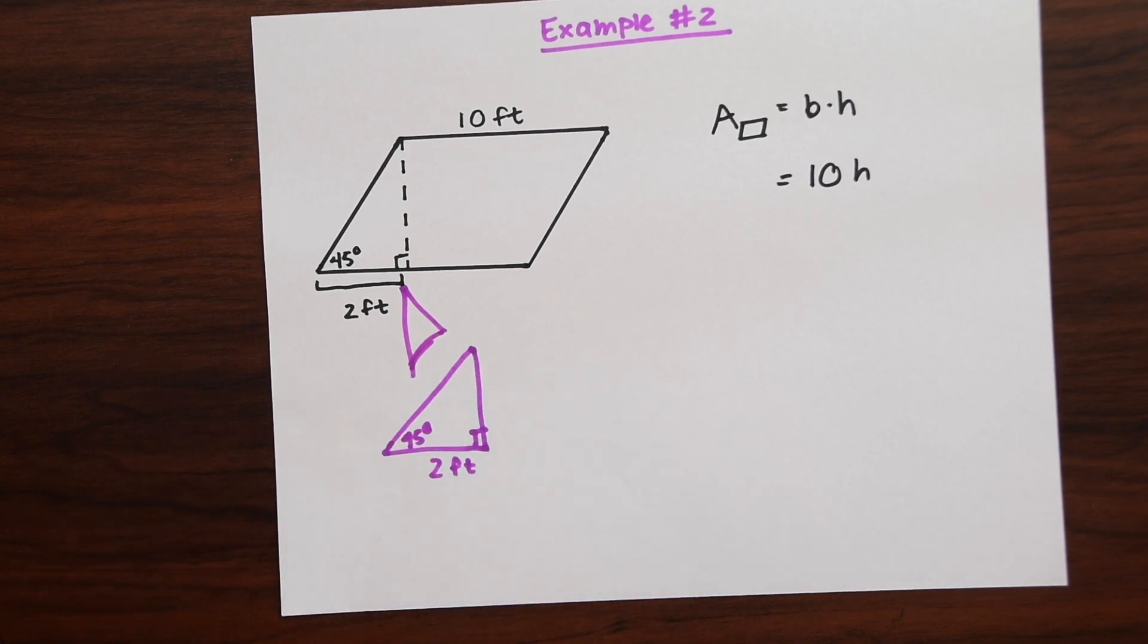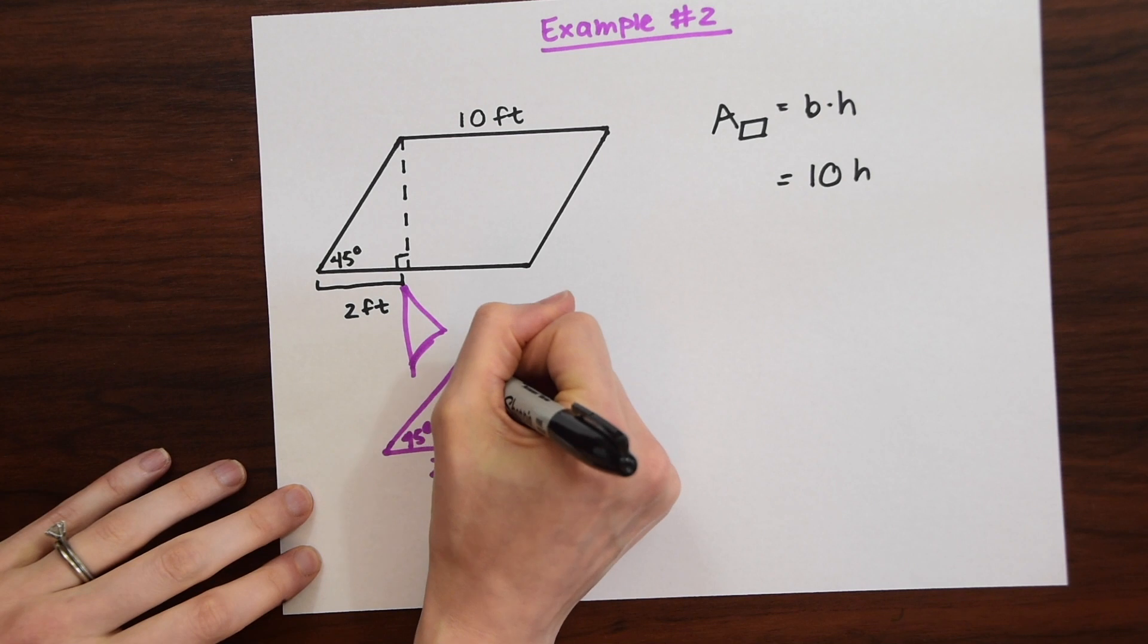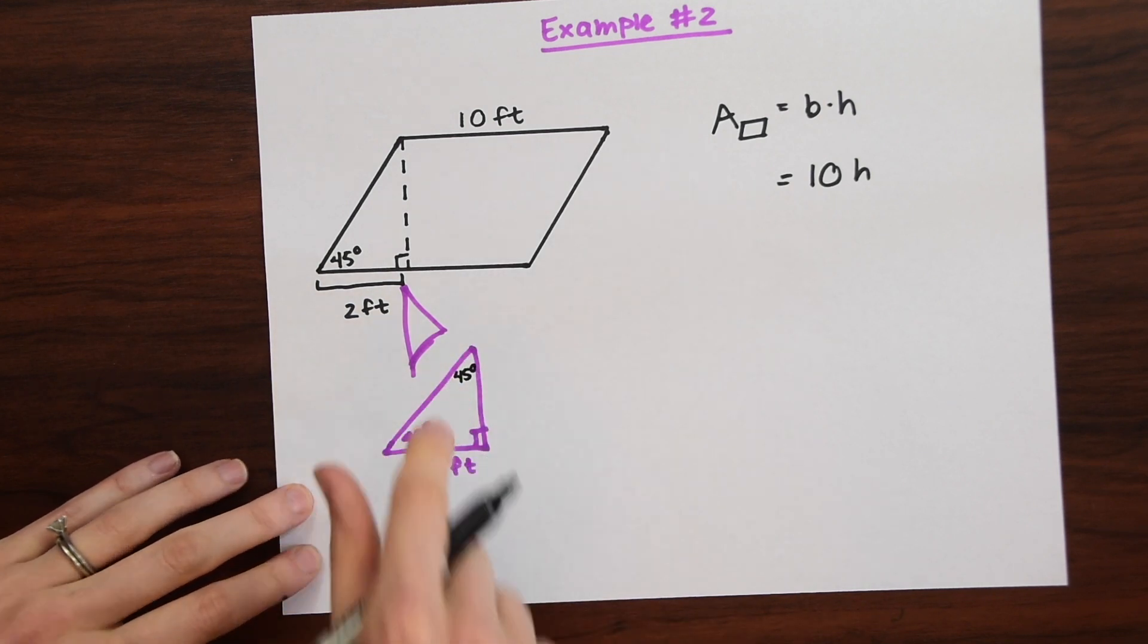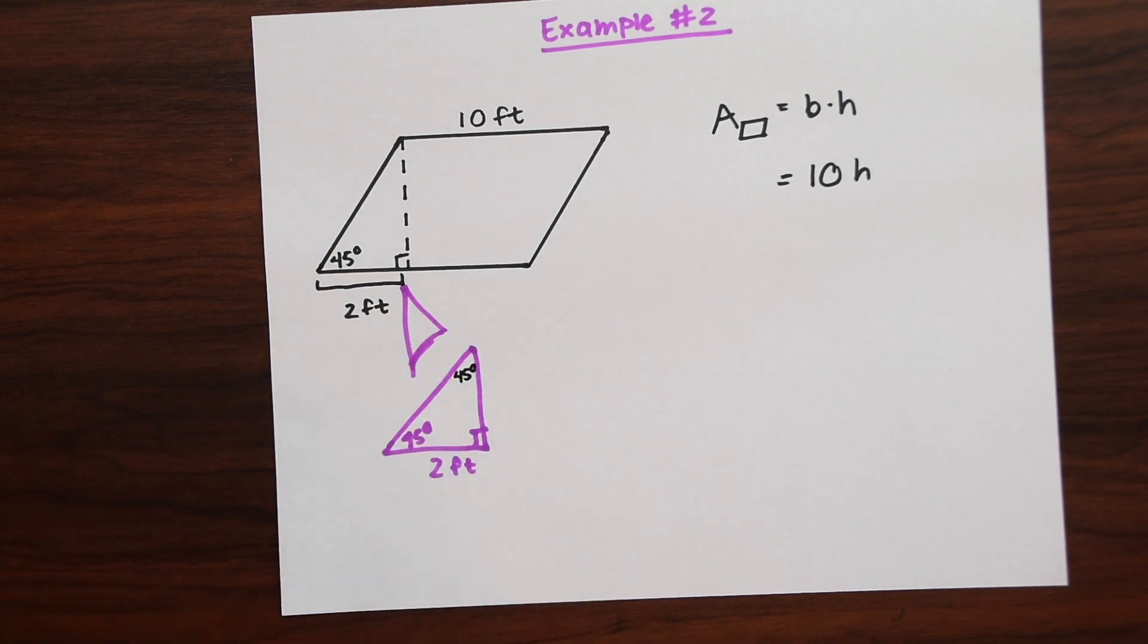Okay so we're given this is 45 degrees. We know this is 90 degrees. So we know that a whole triangle has to add up to 180 degrees. So right away we should know that this other missing angle right here should be 45 degrees. We have a 45-45-90 triangle.